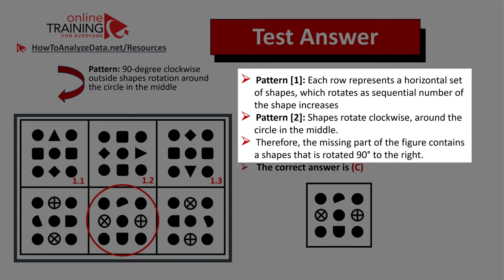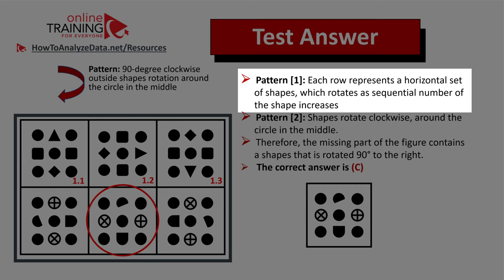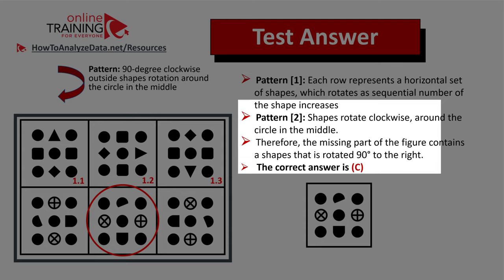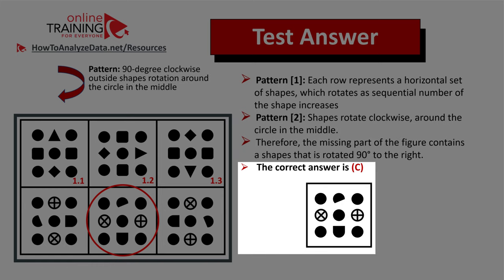Let's recap. There are two patterns here in this question. The first pattern is the fact that each row represents a horizontal set of shapes which rotates as sequential number of shapes increases. And the second pattern indicates that the shapes rotate clockwise around the circle in the middle. Therefore, the correct answer here is choice C.